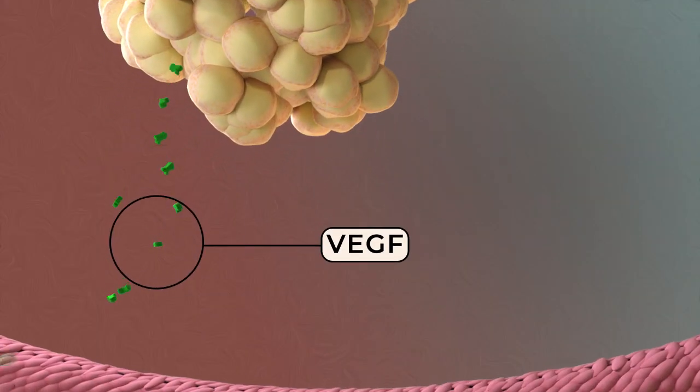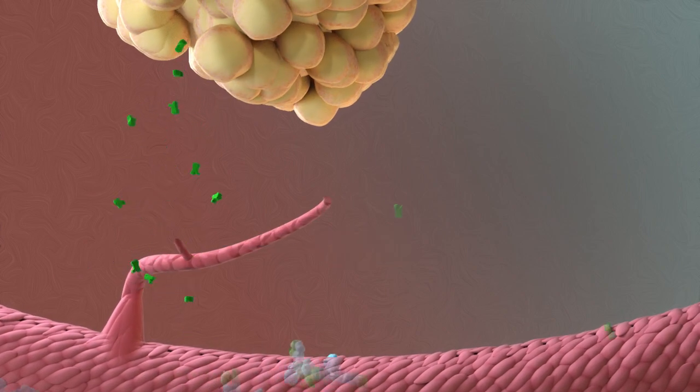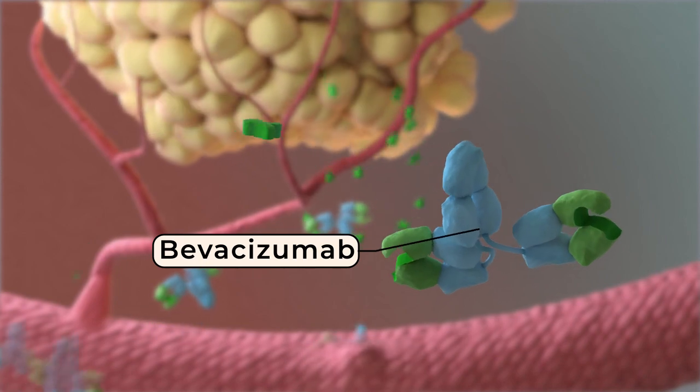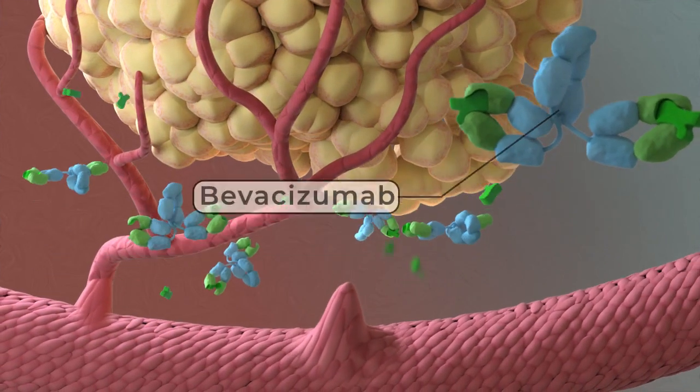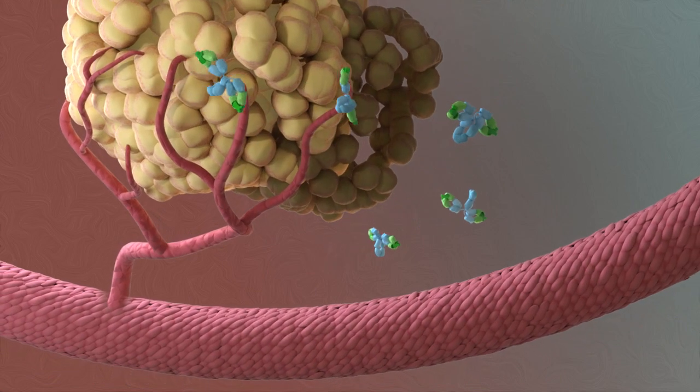Another example involves VEGF, which is a molecule that makes blood vessels grow. A monoclonal antibody called bevacizumab blocks VEGF. Blocking VEGF stops the growth of new blood vessels that the tumor needs to survive.